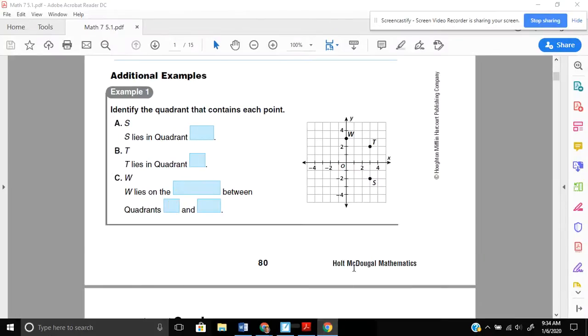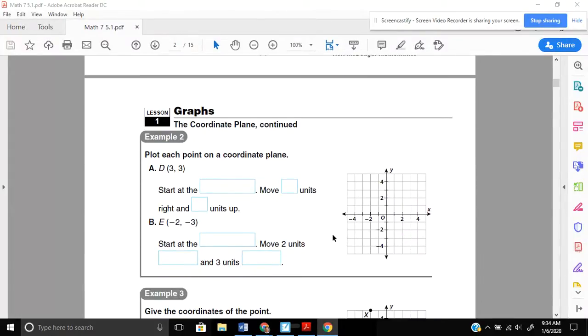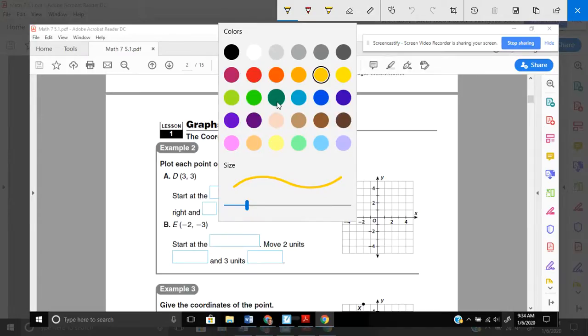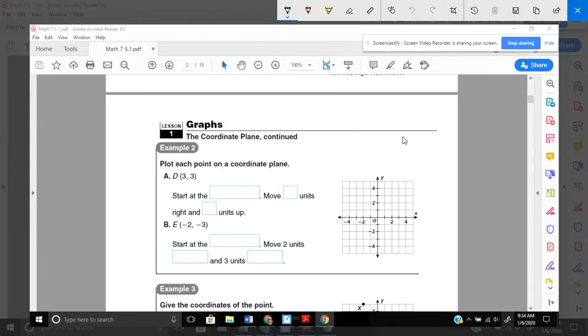It says for these ones now, we're going to plot the points. So plot each point on a coordinate plane. Let's change my color here. And first, it wants us to plot three, three. So remember, first comes X, then comes Y. First, we plot on our X axis, and then we go up and down however many we need to. We always start at the origin. Remember, that's zero, zero here.